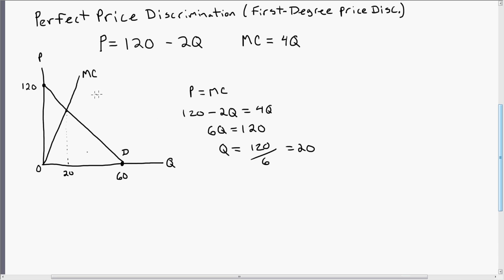So we wanted to get producer surplus. What is producer surplus? It's going to be this triangle right here. Let me color it in a little bit for us. So this entire triangle right here represents producer surplus. We need to calculate the area of this triangle.